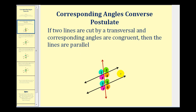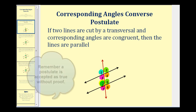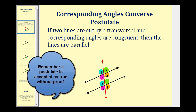You can see here below that I've color coded the corresponding angles. So if any of these pairs of corresponding angles are congruent, we can conclude that the lines would be parallel. So if this is line L and this is line M, we can state that line L is parallel to line M.